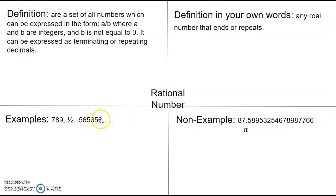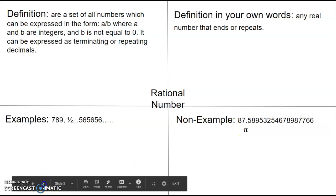So those are examples. And the non-examples, this does not end or repeat right here. And then pi is always irrational, which doesn't end or repeat. So that's an example you can use when you're doing this.